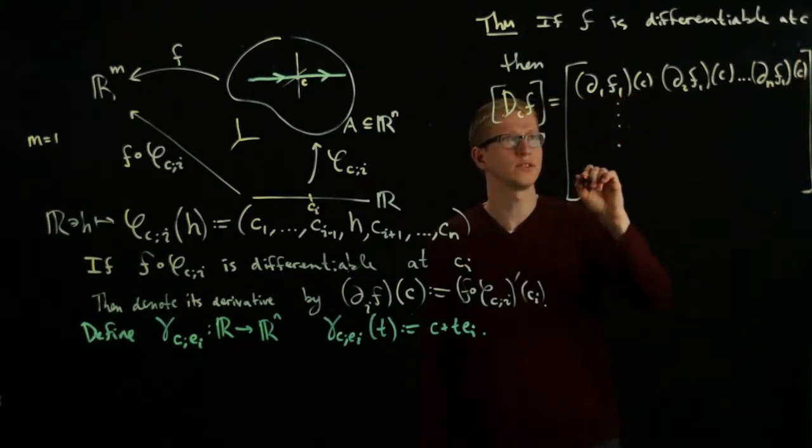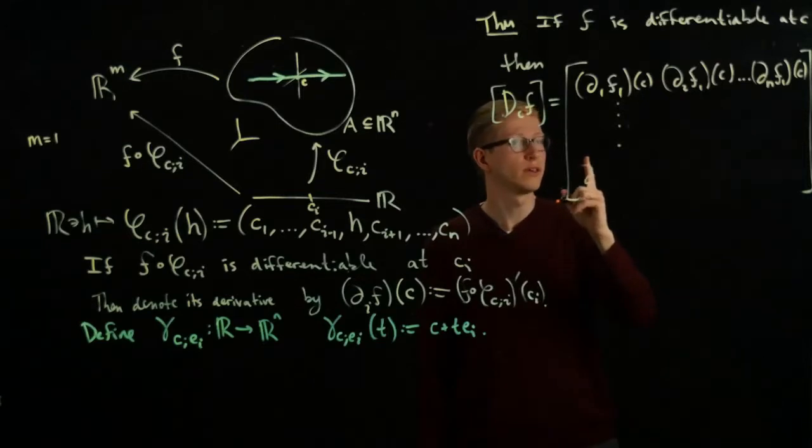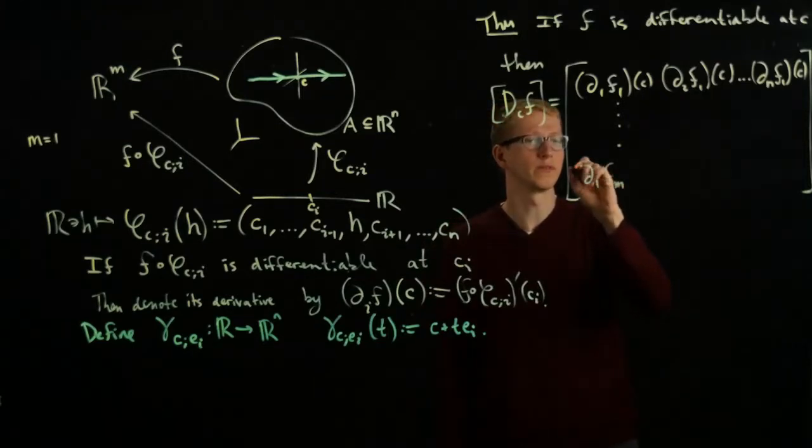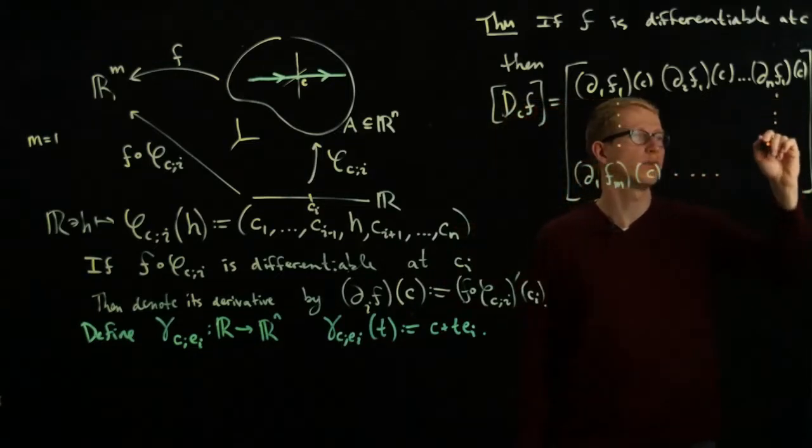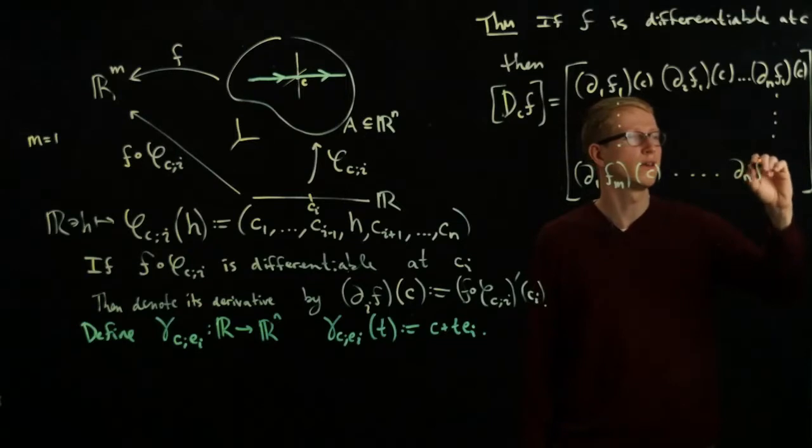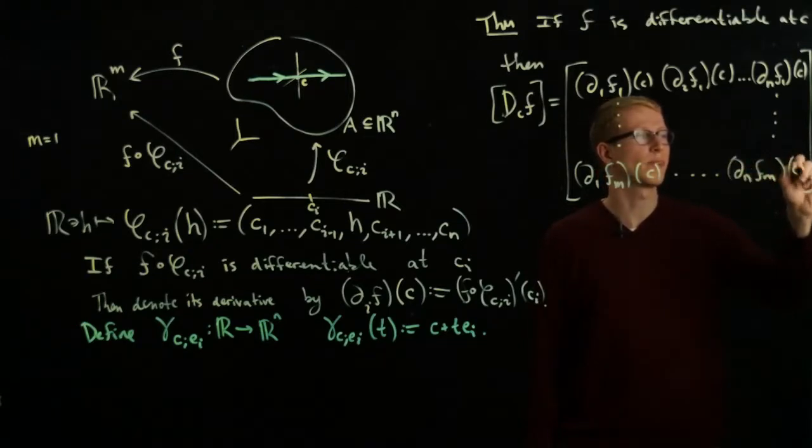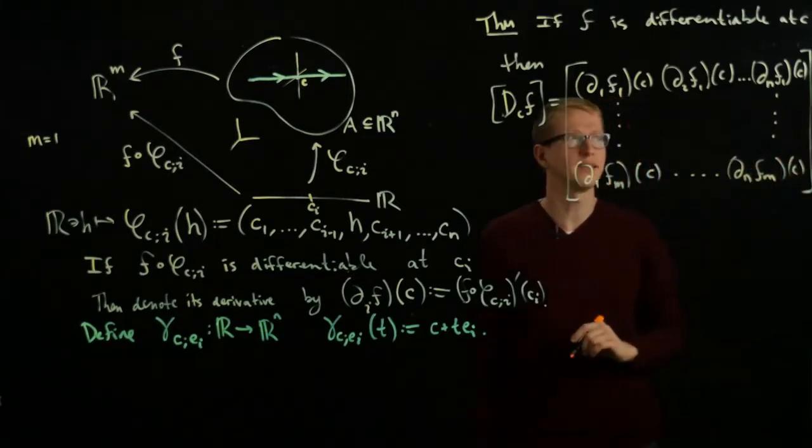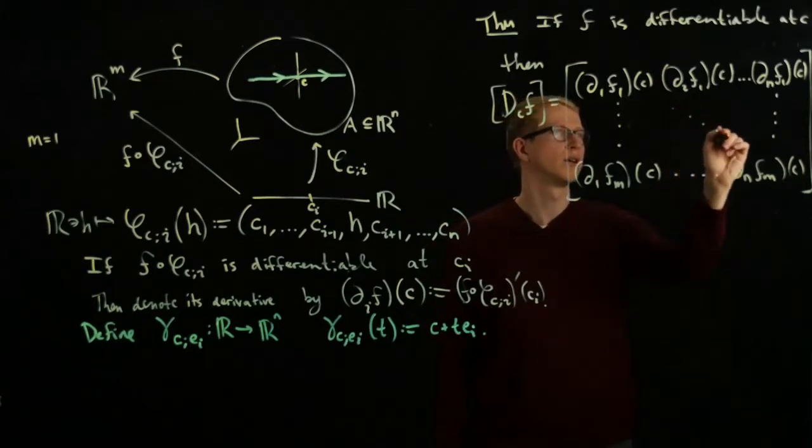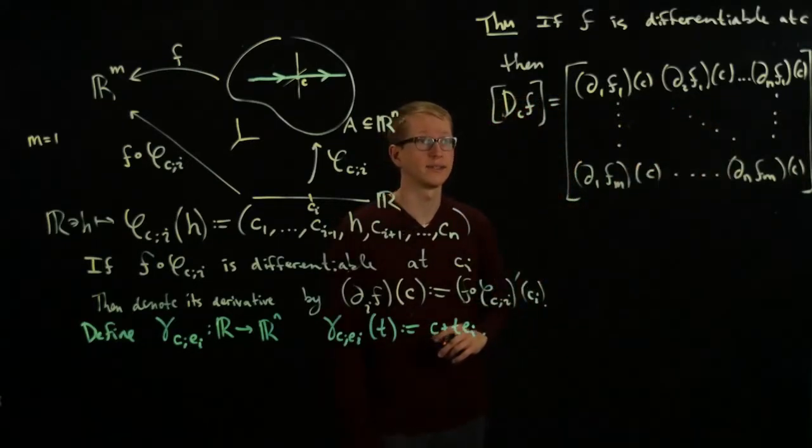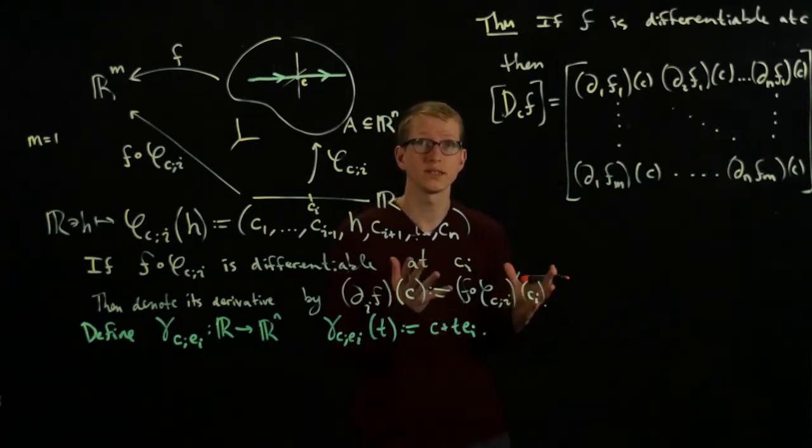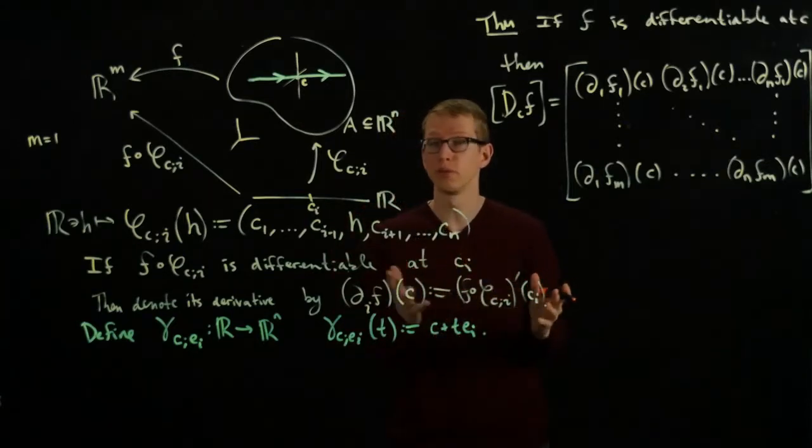It goes down in this direction where you take the first partial derivative of the m-th component function and evaluate at C, and so on all the way up to ∂_n F_m at C. It turns out that this matrix is the differential of F at C.